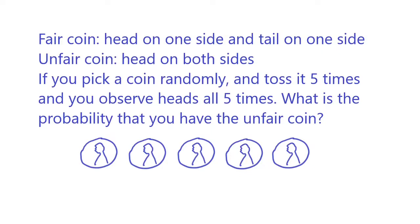Today we are going to do a coin problem. You have two coins: a fair coin with heads on one side and tails on the other, and an unfair coin with heads on both sides. If you pick a coin randomly and toss it five times, and you observe heads all five times, what is the probability that you have the unfair coin?